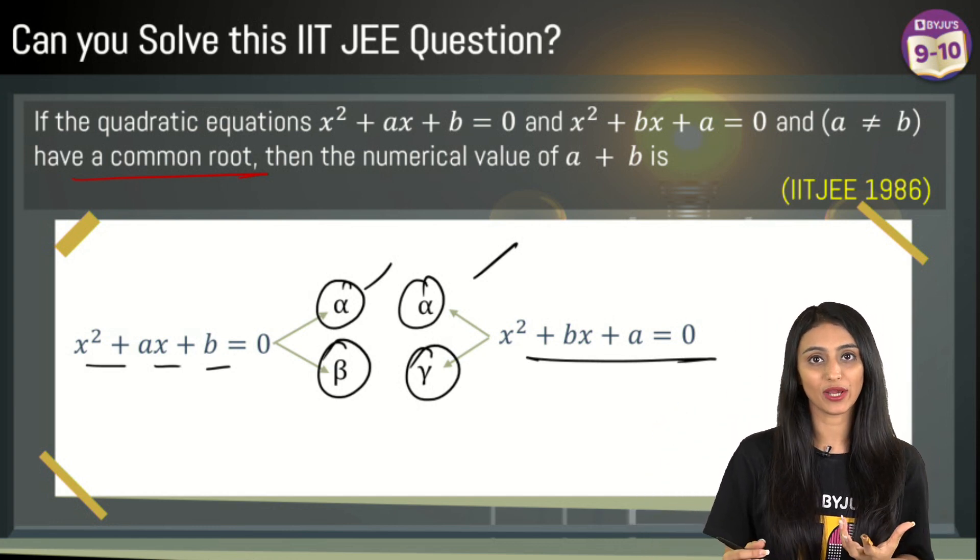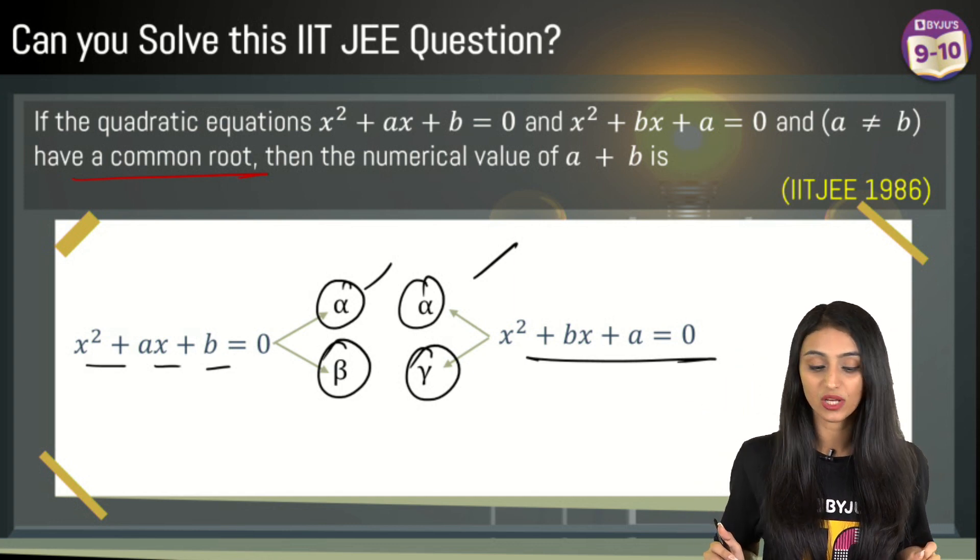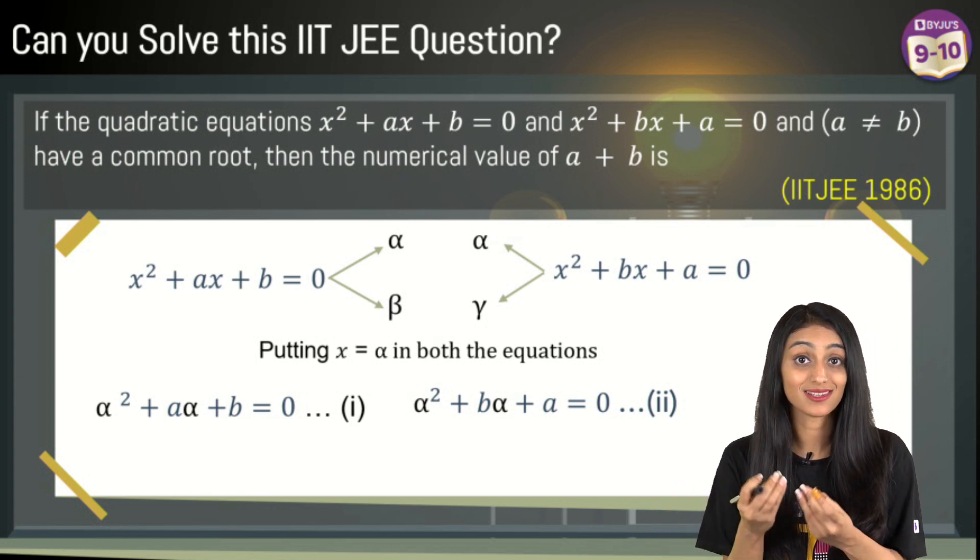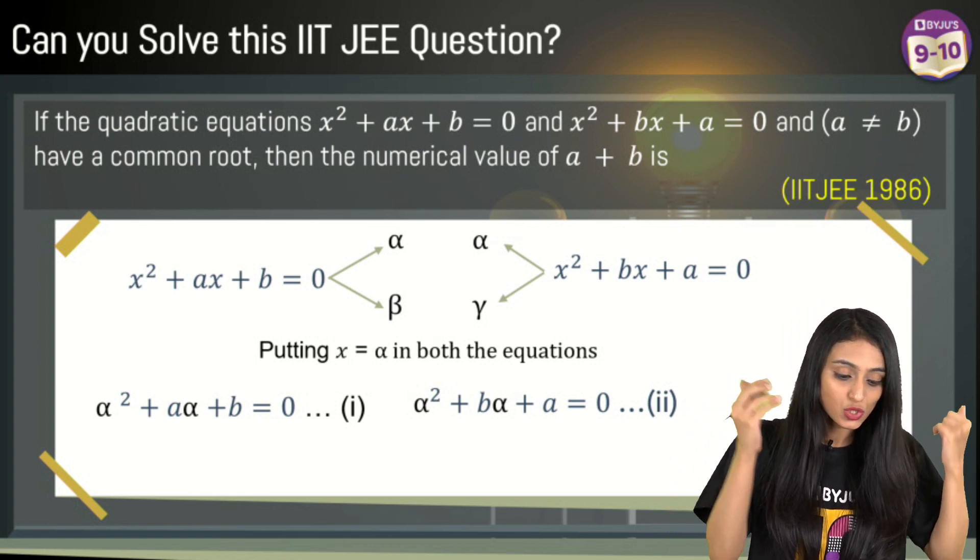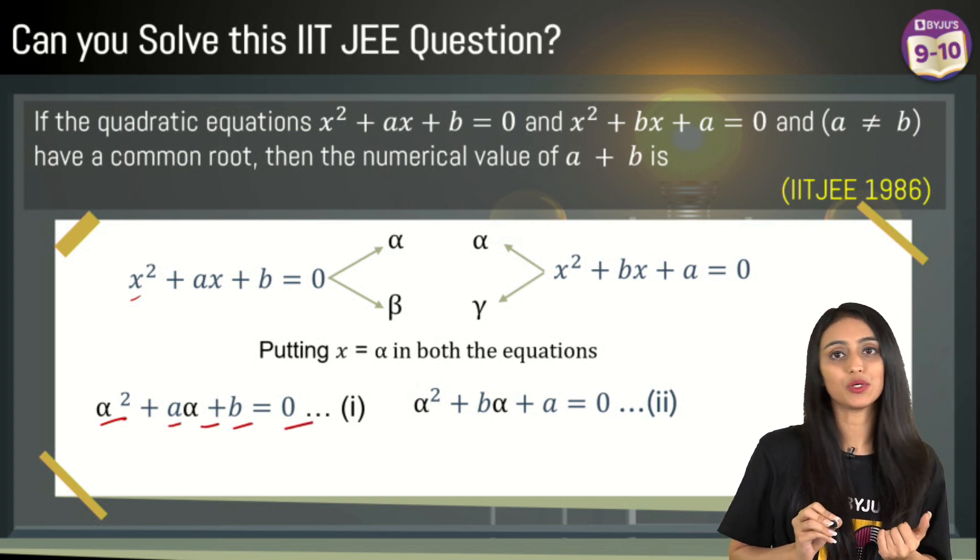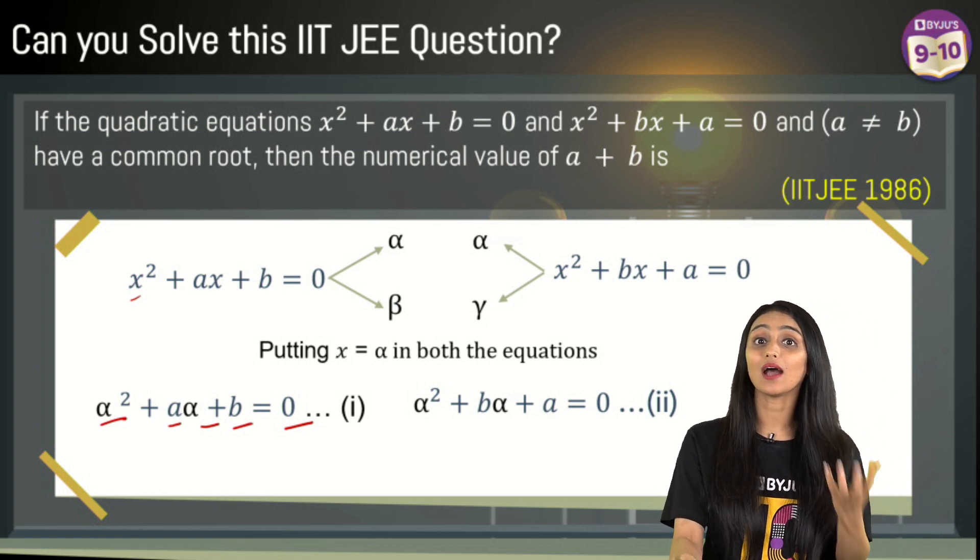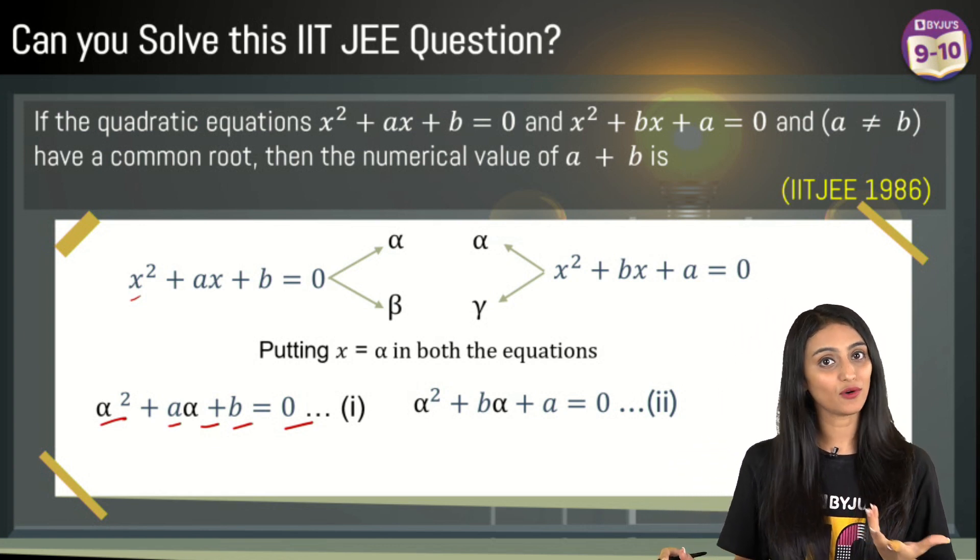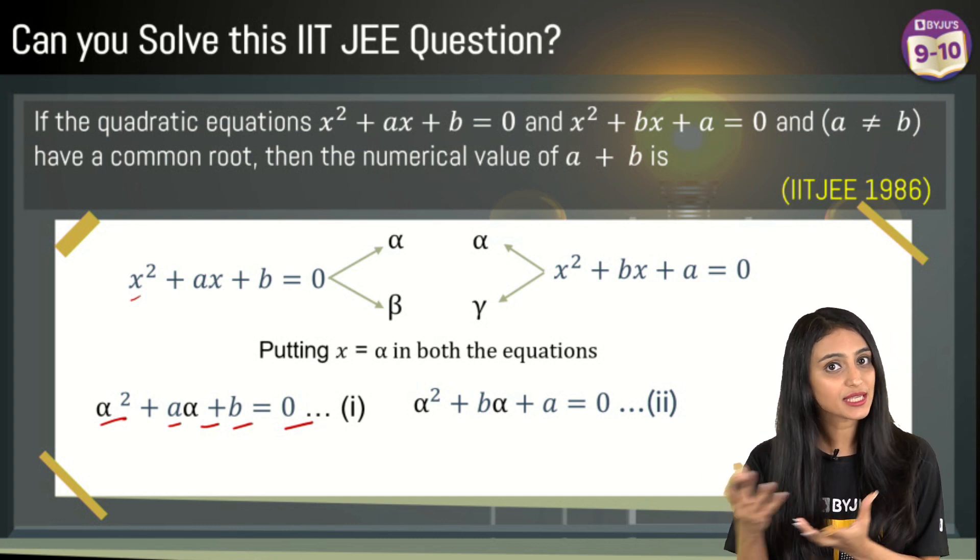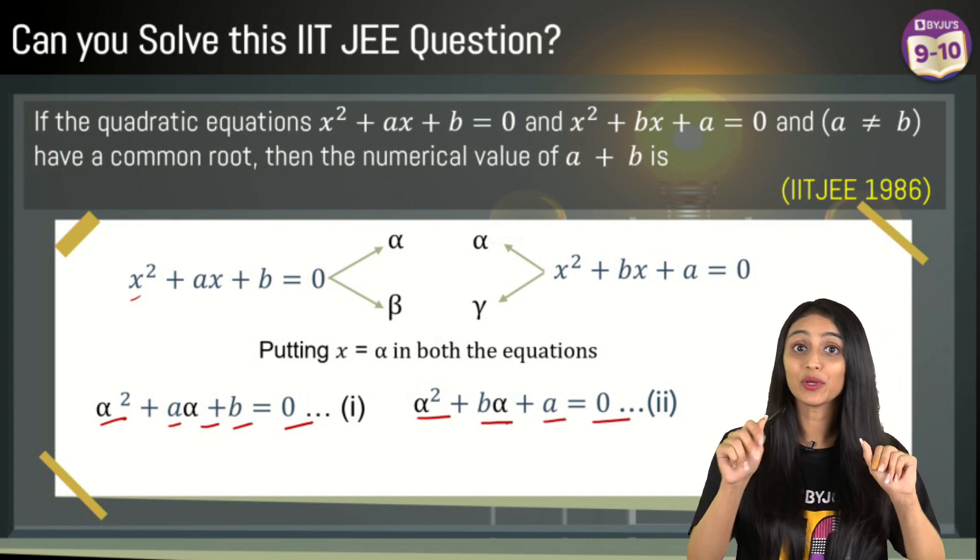Now since this is the root of the equation, if I substitute this, let's suppose I am talking about the first equation. If I replace x with α, the entire equation should be equal to 0 because it is a root of the equation. So I have replaced x with α here, I get α² + aα + b = 0. Let's mark this as the first equation. The same thing I am going to do with the other equation also. So I can replace x with α over here as well because that's the root of this equation. So α² + bα + a = 0. You have your two equations.